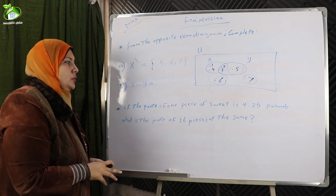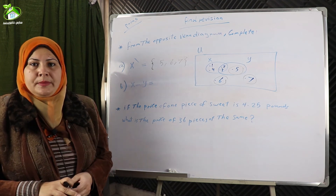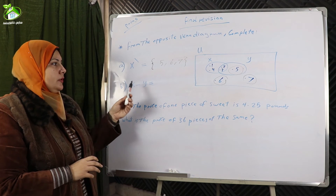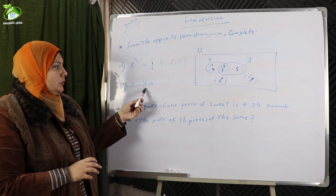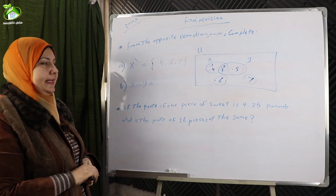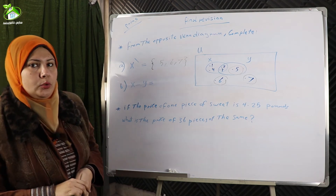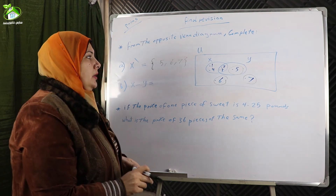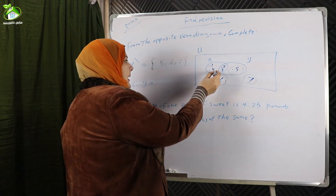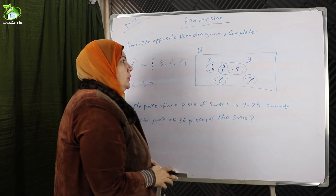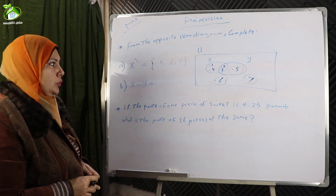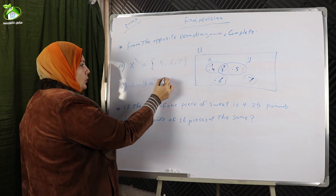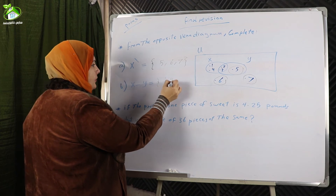X difference Y means the elements belonging to X and not belonging to Y. We note that one and four belong to X and do not belong to Y. So X difference Y equals the set {1, 4}.